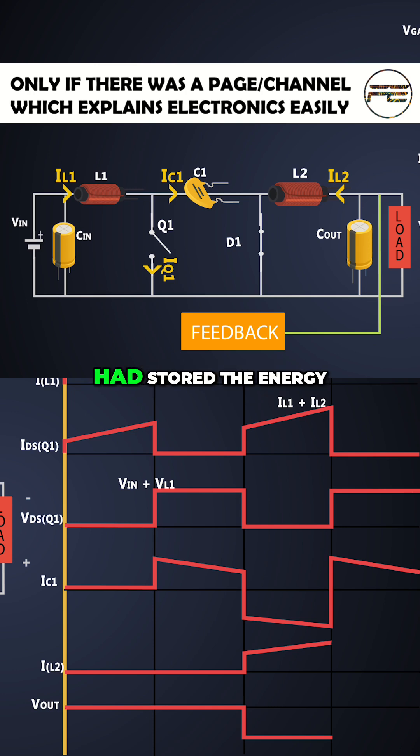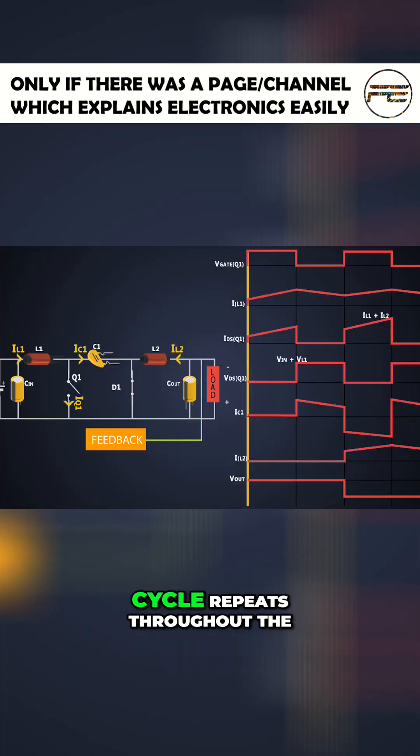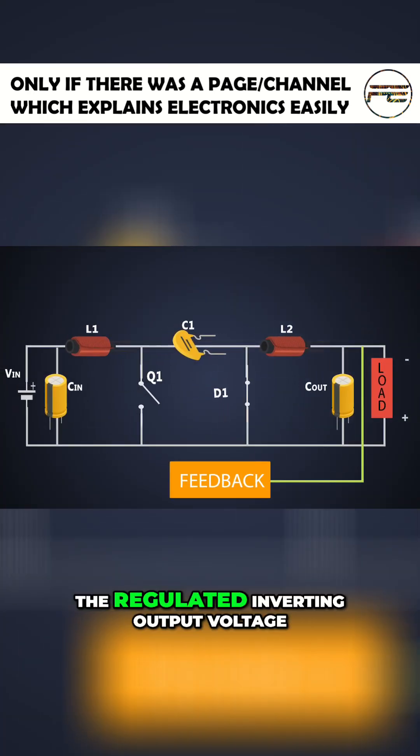Because these components had stored the energy and charge in the earlier cycle of the converter. And the inductor current L2 decreases linearly, which keeps the output voltage constant.